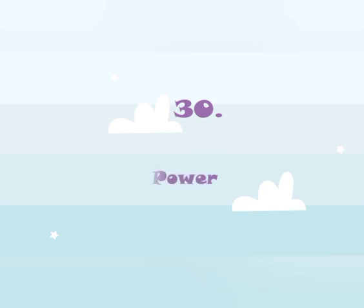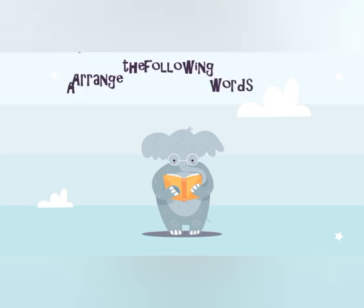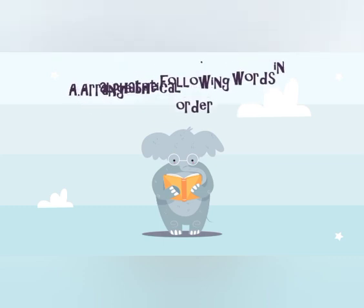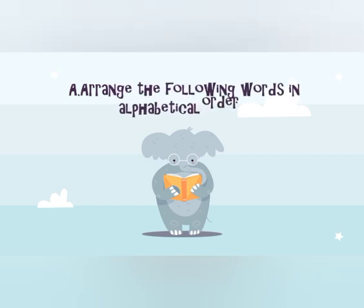Let's do our next chapter — chapter number 30, Brain Power. The first exercise of Brain Power: we have to arrange the words in alphabetical order. We have to say the alphabets and then arrange the words in the perfect order.